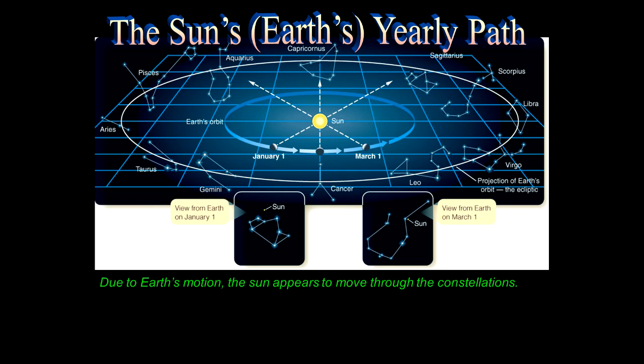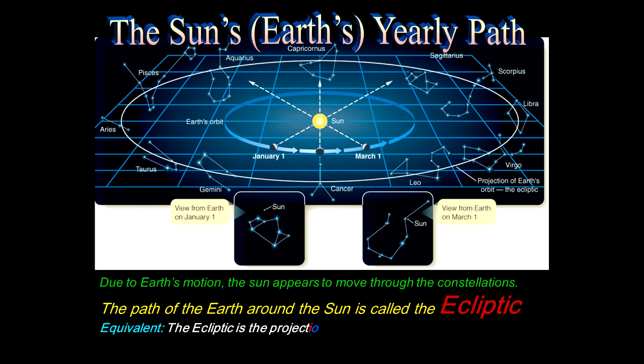The path of the Earth around the Sun is called the ecliptic. In like manner, we can think of that ecliptic as the projection of Earth's orbit onto the celestial sphere, or equivalently, the apparent path of the Sun as viewed from Earth. Where's the Sun? The Sun is on the ecliptic. The ecliptic plane, which is the plane formed from this circle, is very significant in terms of its relationship to the celestial equator.